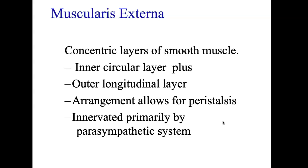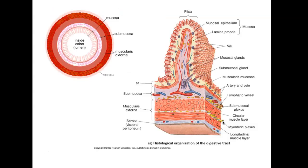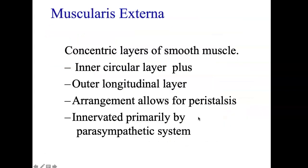Let's move on to the muscularis externa. This is concentric layers of smooth muscle — an inner circular layer and an outer longitudinal layer. You have longitudinal and circular, and when you cut circular in cross-section they look like little circles. This arrangement is going to allow for peristalsis, contracting and pushing the food down the digestive system as the longitudinal and circular layers contract. This is all innervated primarily by the parasympathetic system — rest and digest — the digest part.